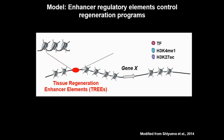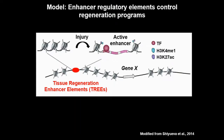Enhancers are key factors for precise patterns of gene expression — they turn on target genes in the right place and at the right time. We hypothesize that there are tissue regeneration enhancer elements, which we call TREEs, throughout the genome. These TREEs would be inactive in uninjured tissue, and the surrounding chromatin structure would be closed. However, after injury, the injury signal opens the chromatin structure and activates these TREEs to turn on target genes involved in regeneration.